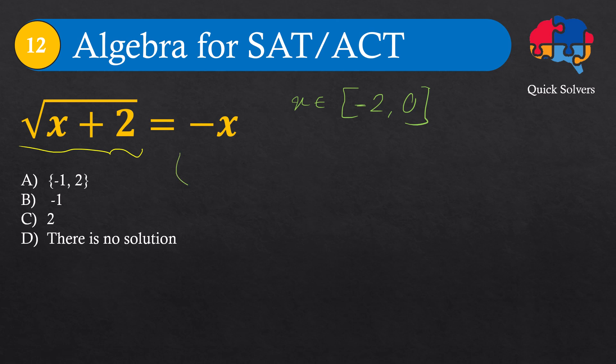Now to find x, we can raise each side to the power of 2 to get rid of the square root. This gives us x plus 2 equals x squared. Then taking everything to the right side, we get x squared minus x minus 2 equals 0.